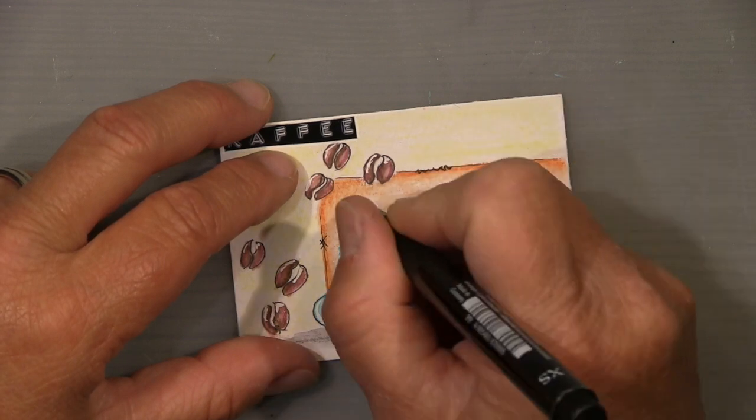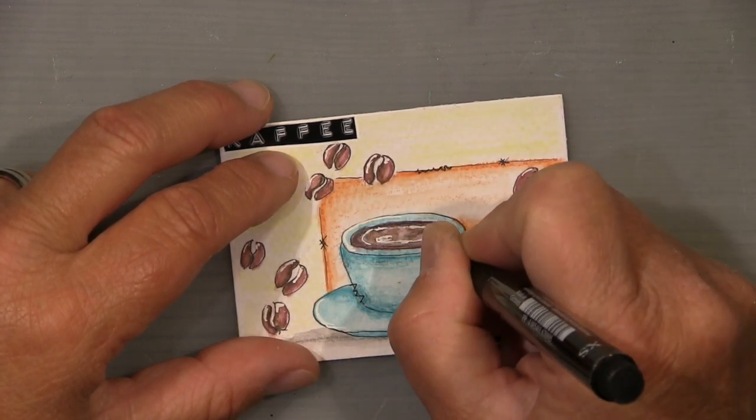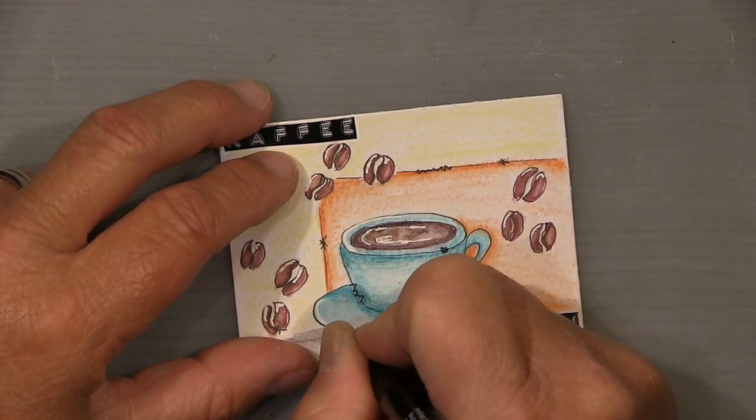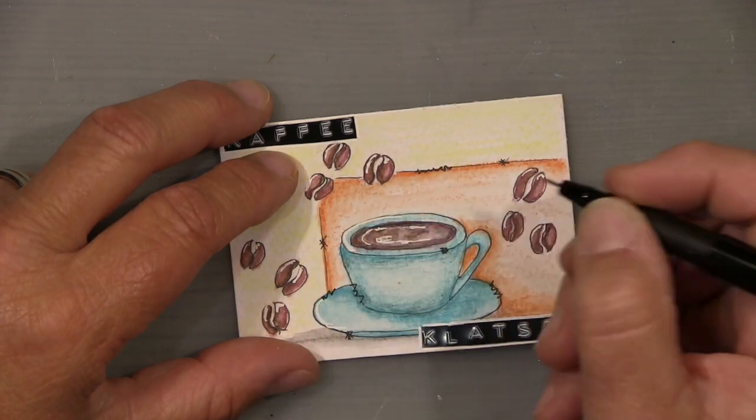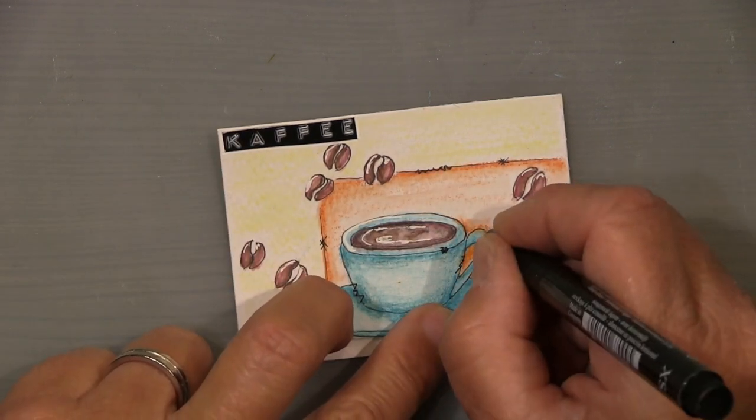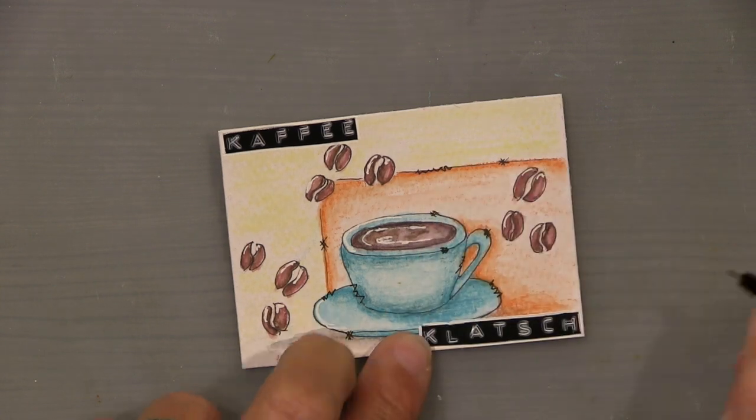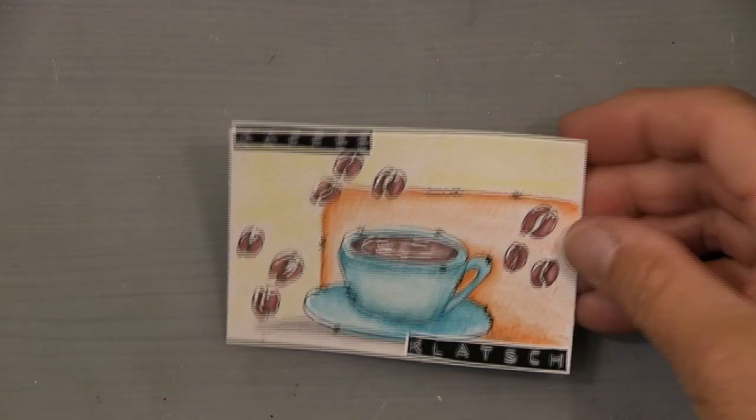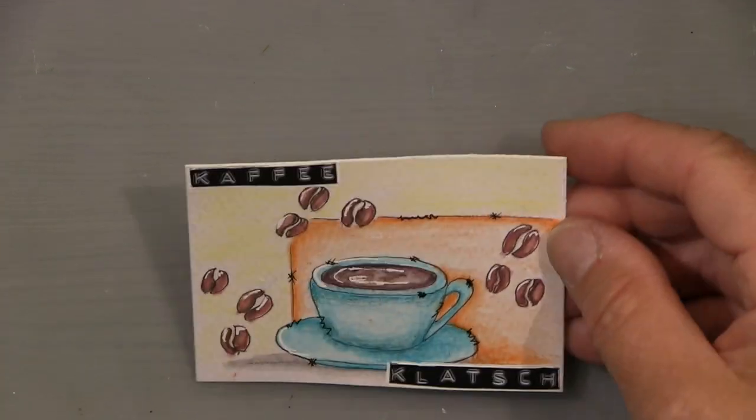Basically that's it. I make a bit of marks here and there on the lines, mixed media marks and little signs so it looks a bit more whimsical. Here is the close-up already.